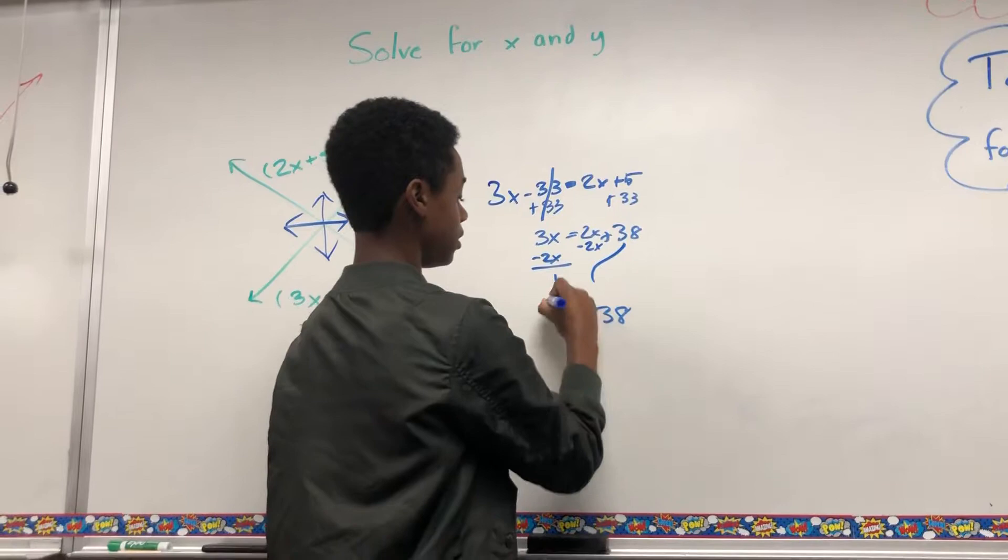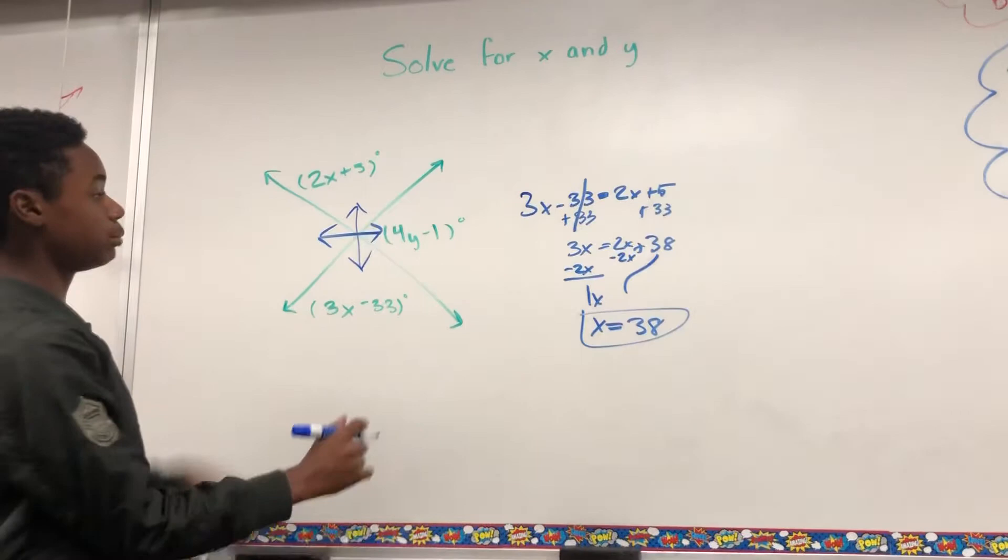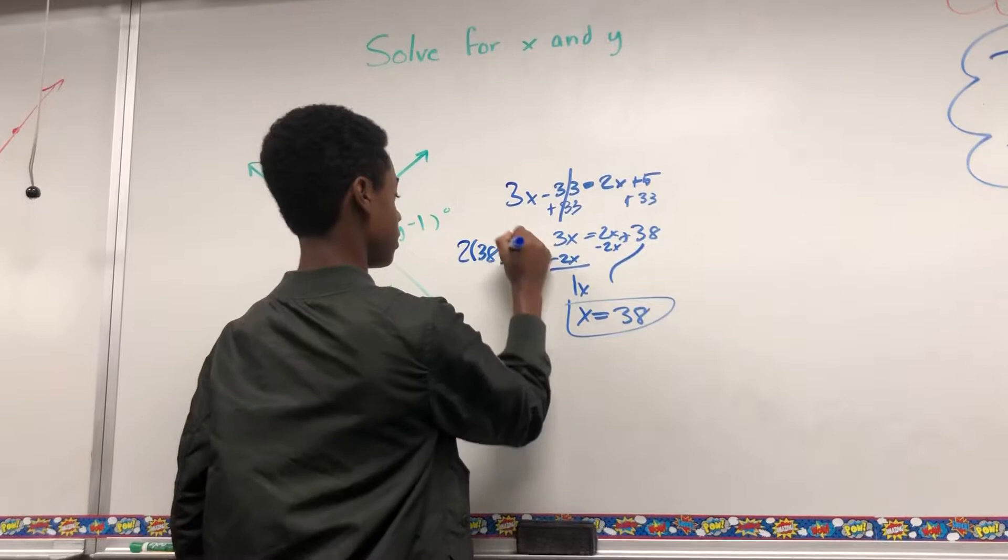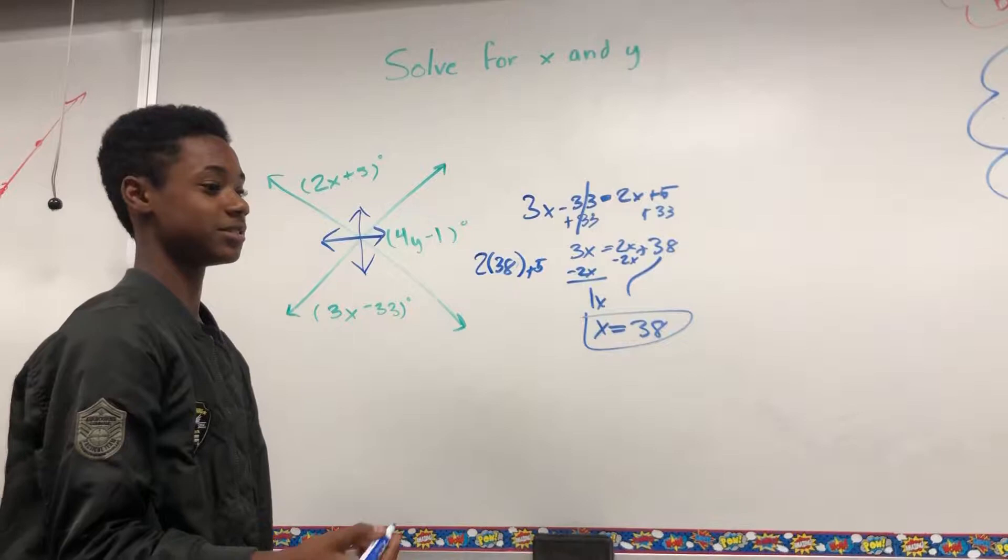Okay, so now you want to plug it back in. I'm going to plug into the top one: 2 times 38 plus 5. 2 times 38 is what, class A? 2 times 38 plus 5 is 81.